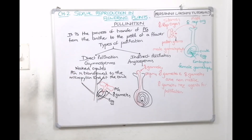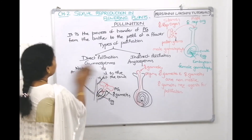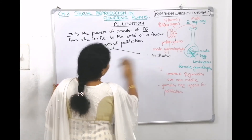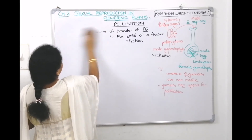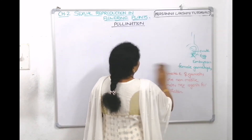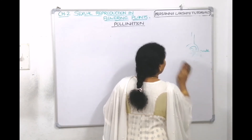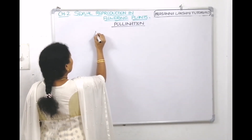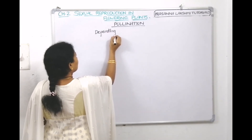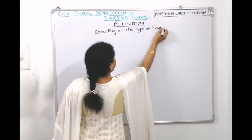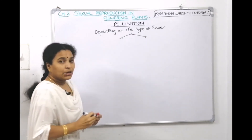So, indirect pollination is seen in angiosperms and direct pollination is seen in gymnosperms. The second type of pollination depends on whether pollination happens inside a closed flower or an open flower. Depending on the type of flower, we divide pollination into cleistogamy and chasmogamy.